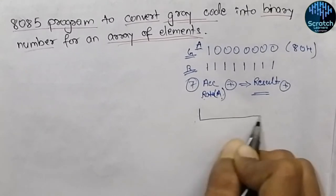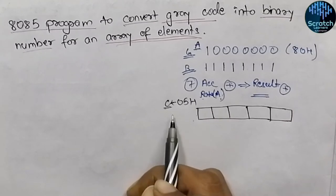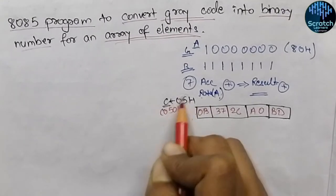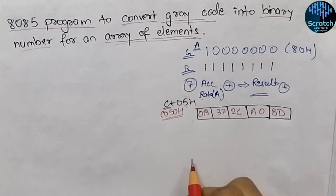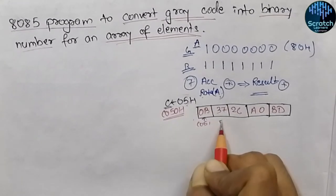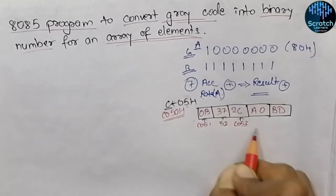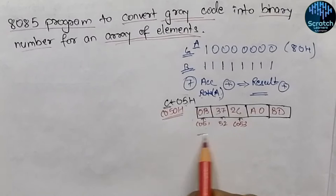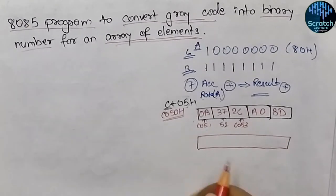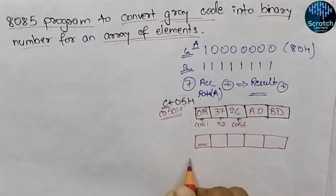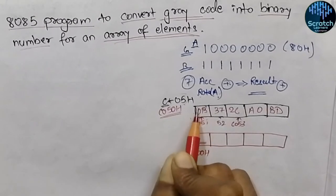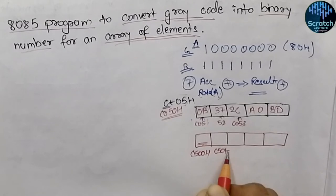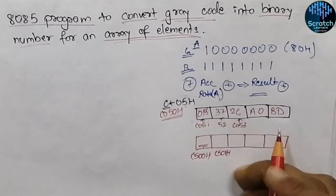When given an array of data, say five elements, five is the count. We input all data starting from memory address C050 hex: the count is at C050, the first element at C051, the next at C052, C053, and so on. The converted binary outputs are stored at a separate set of memory locations starting from C500 hex — the binary result of each gray code value is stored sequentially from C500, C501, and so on until the last element.